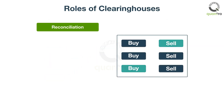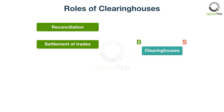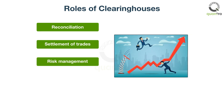Clearing houses mainly perform three roles. Clearing, where reconciliation of trades happens for all trading members. Settlement, where securities are transferred from sellers to buyers — only fund settlement happens in the case of cash-settled financial instruments. Risk management, in which margins for leveraged products such as derivatives are decided.